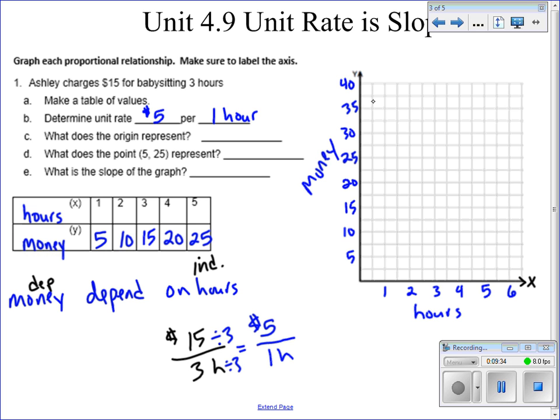So as you can see, this represents money, 40 being the most money that can be represented on this graph and $5. Actually, zero being the least. So now the question is, what does this origin represent? Well, right here at the zero, zero point, that is our origin.